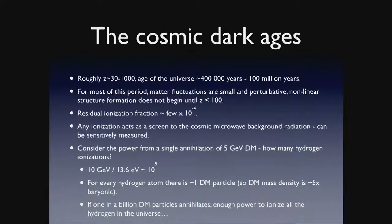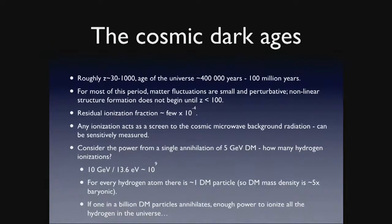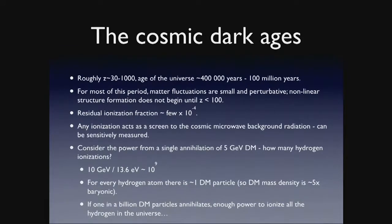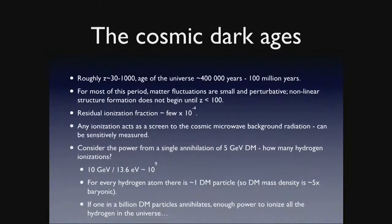By early times here during the cosmic dark ages, the temperature of the universe at the surface of last scattering is about 2,700 Kelvin, which translates into an energy scale of about 1 eV. I told you back in the first lecture that thermal dark matter typically freezes out when the temperature of the universe is about a twentieth of the dark matter mass. So for 100 GeV dark matter, freeze-out happens long before the times I'm talking about. You might say the annihilation is frozen out, but freeze-out just means dark matter annihilation is no longer significantly depleting the dark matter abundance — it's still ongoing. There's still a slow trickle of production of high-energy particles if dark matter annihilates everywhere in the universe at all times.